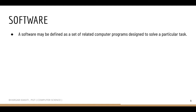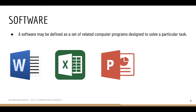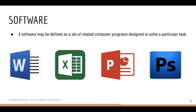Next is software. A software may be defined as a set of related computer programs designed to solve a particular task. Some examples of software include MS Word, used for making documents; MS Excel, used for data analysis and calculations; PowerPoint, used for making presentations; and Photoshop, used for photo editing. Each software is designed to perform a particular task.